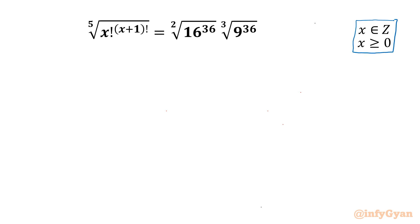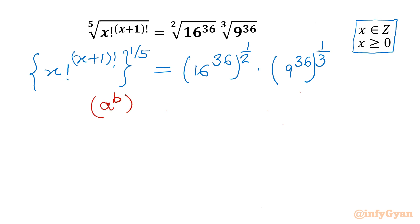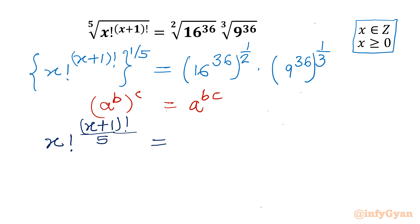Let's get started by writing our equation as x factorial raised to the power x plus 1 factorial, whole power 1 over 5. On the right hand side we can write 16 power 36 whole power 1 by 2, times 9 raised to the power 36, whole power 1 by 3. Now I will write one most popular exponent law: a power b, whole power c, can be written as a power b times c. So we can apply this property, giving us x factorial raised to the power x plus 1 factorial divided by 5 on the left hand side, equal to 16 raised to the power 36 times 1 by 2, times 9 raised to the power 36 times 1 by 3.